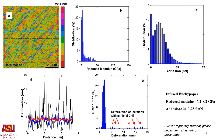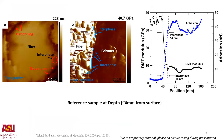Overall, microscopically, the reduced modulus of the Bucky paper is between 6.2 and 8.2 GPa, and adhesion is between 21 and 23 nN. Looking at the interface, we first examine the carbon fiber monofilament/epoxy interface as a reference. For the carbon fiber and polymer, we can use both adhesion and DMT reduced modulus as channels to observe the variation in value that indicates the interface. That interface is around 14 nanometers.